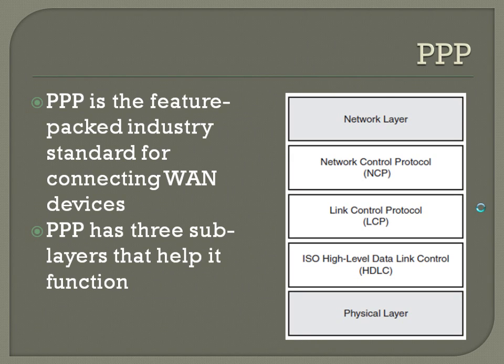PPP is the feature-packed industry standard for connecting WAN devices. Even though it's just a layer 2 protocol, it actually has three sub-layers that help it function. At the bottom we have layer 1, the physical layer; at the top, layer 3, the network layer; and all three sub-layers in between are technically layer 2 data link, but they are different sub-layers of PPP.